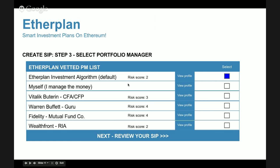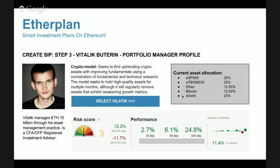Jane decides to check Vitalik Buterin's profile on EtherPlan. His profile, prepared by EtherPlan research, shows he manages 10 billion Ether, is a Certified Financial Analyst and Certified Financial Planner. His crypto model seeks up-trending crypto assets with improving fundamentals using a combination of fundamental and technical research.